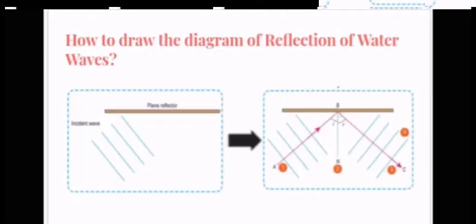How to draw the diagram of reflection of water wave? Step 1: Draw an arrow line AB perpendicular to incident wave front to represent the direction of propagation of incident wave.